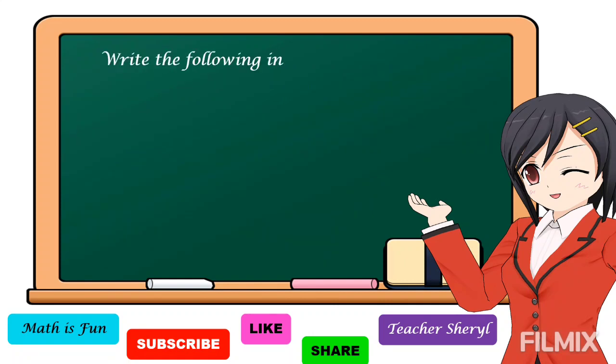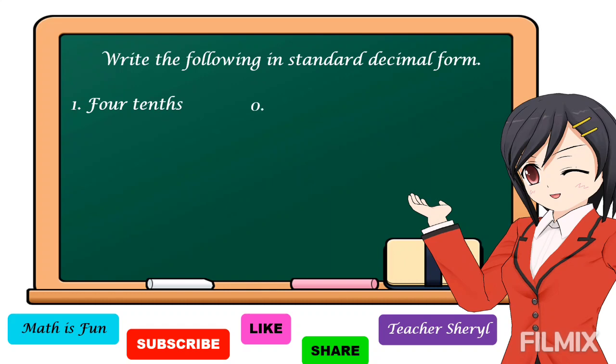Write the following in standard decimal form. Number one: four tenths. In our first example, we don't have the word 'and,' which means we don't have a whole number. So, we're going to write zero for our whole number, then a decimal point, then four. We read this number as four tenths, written as 0.4.